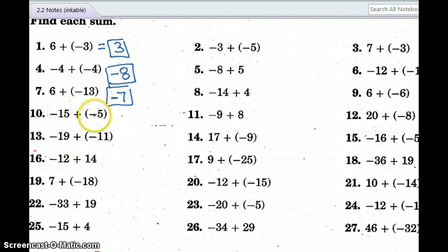Opposite signs, I subtract. Six from 13 is seven. The 13 is a larger absolute value. So I keep the sign of the negative 13. Do you see how that goes? Same sign, both negative. So I will add them and keep the sign negative. So that gives us negative 20.